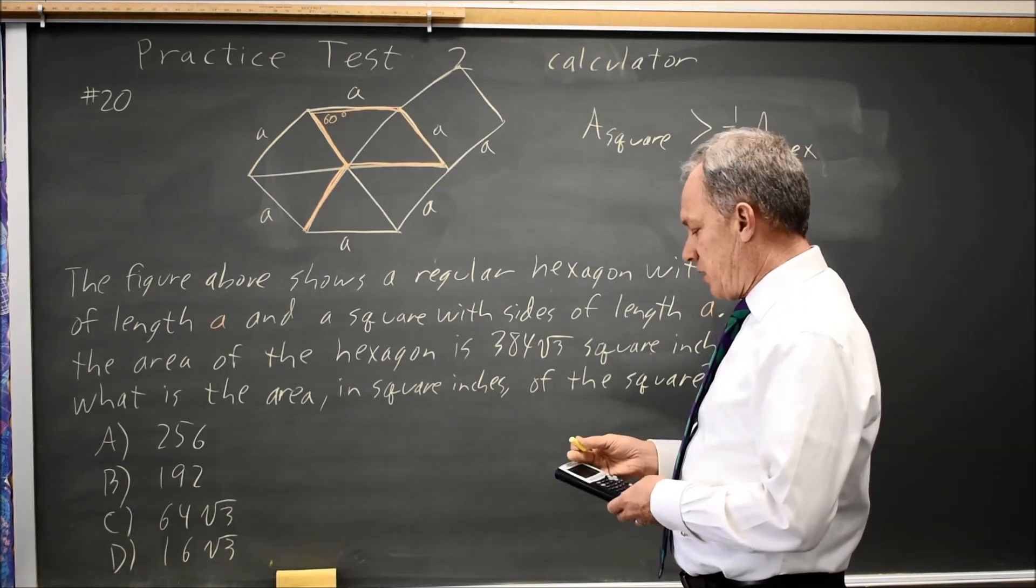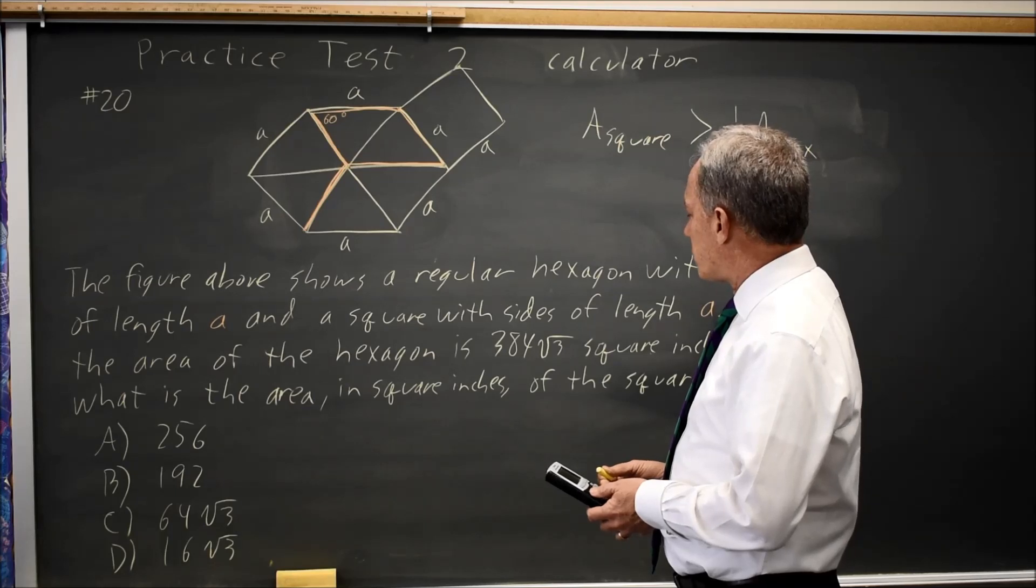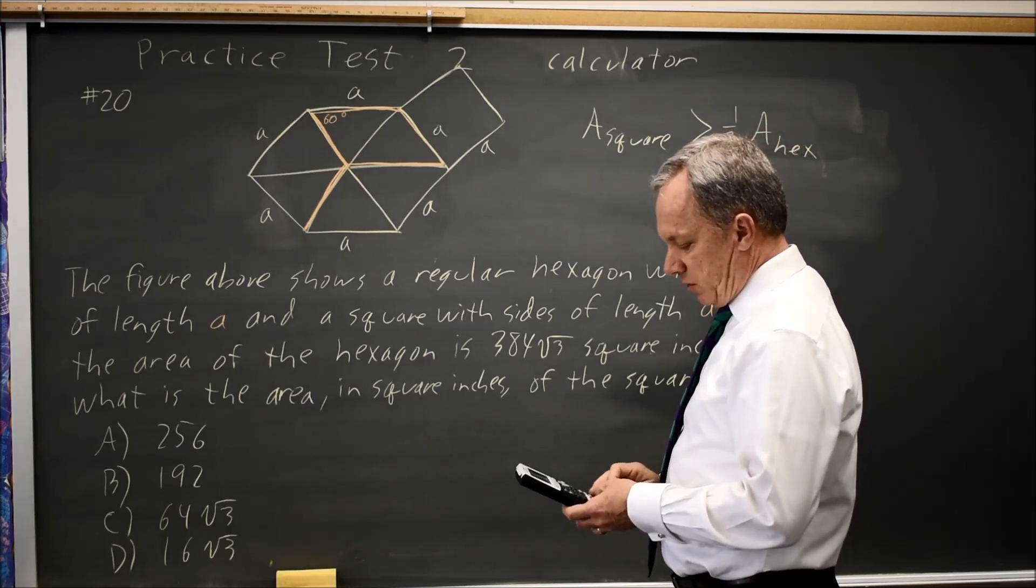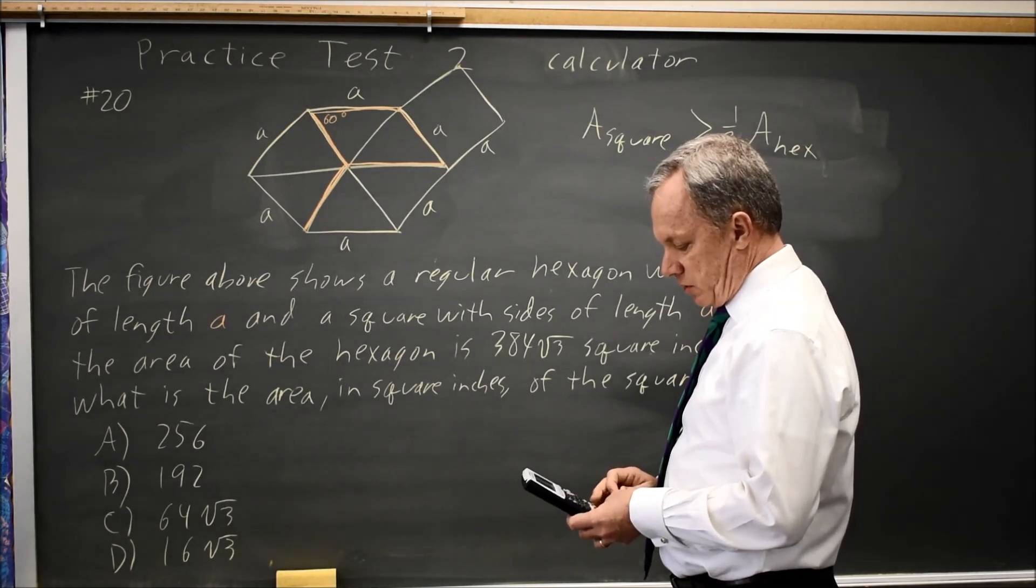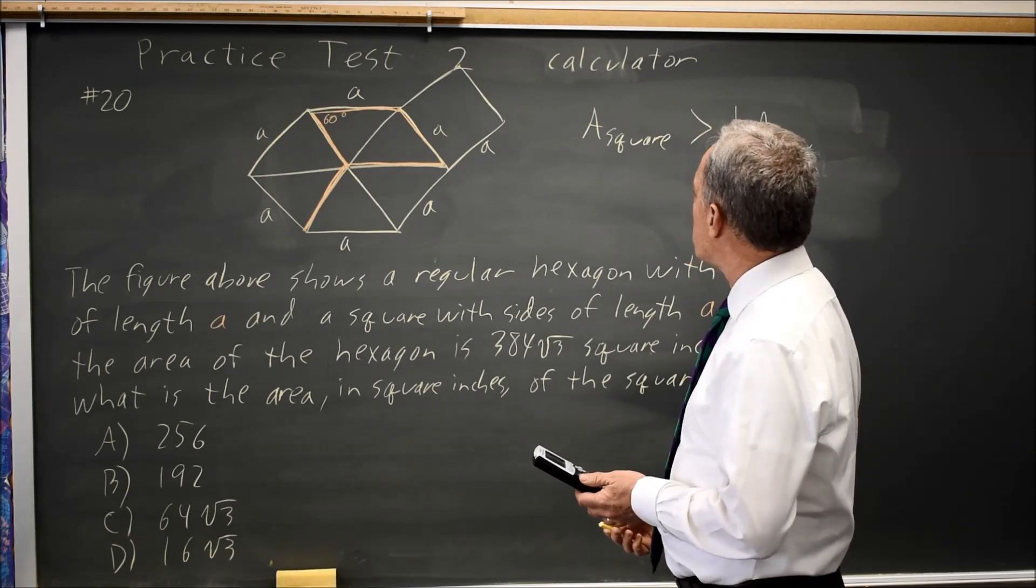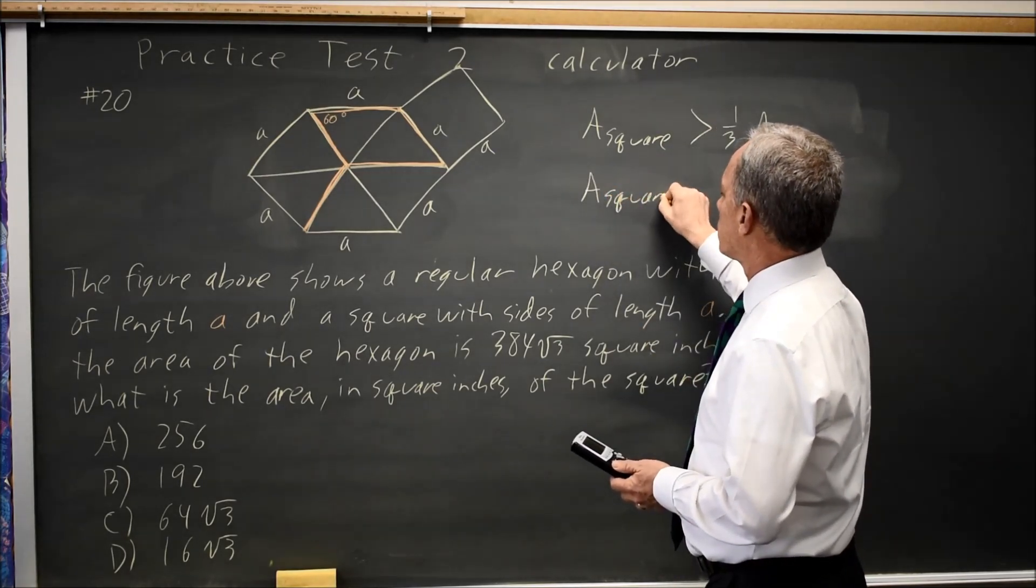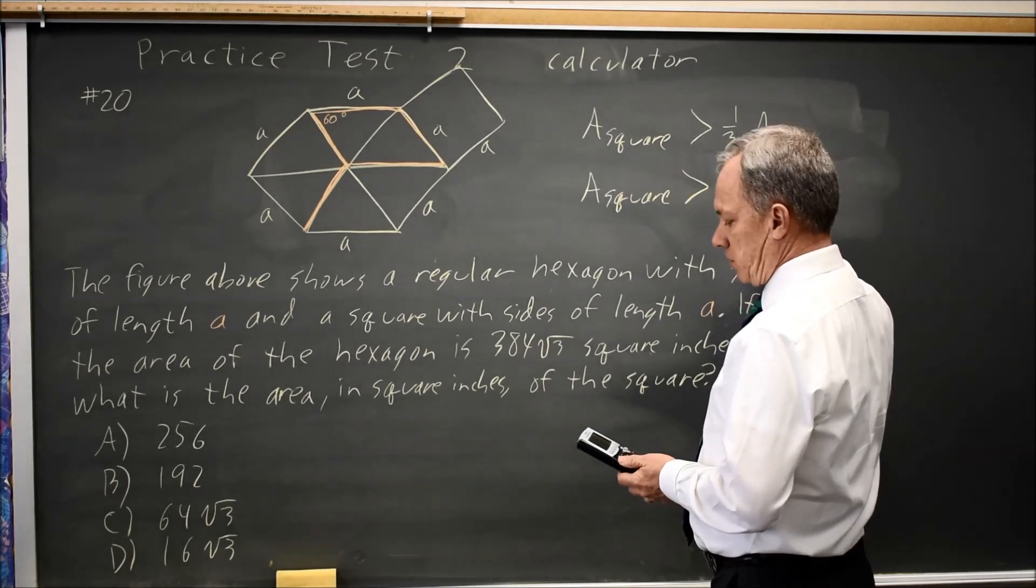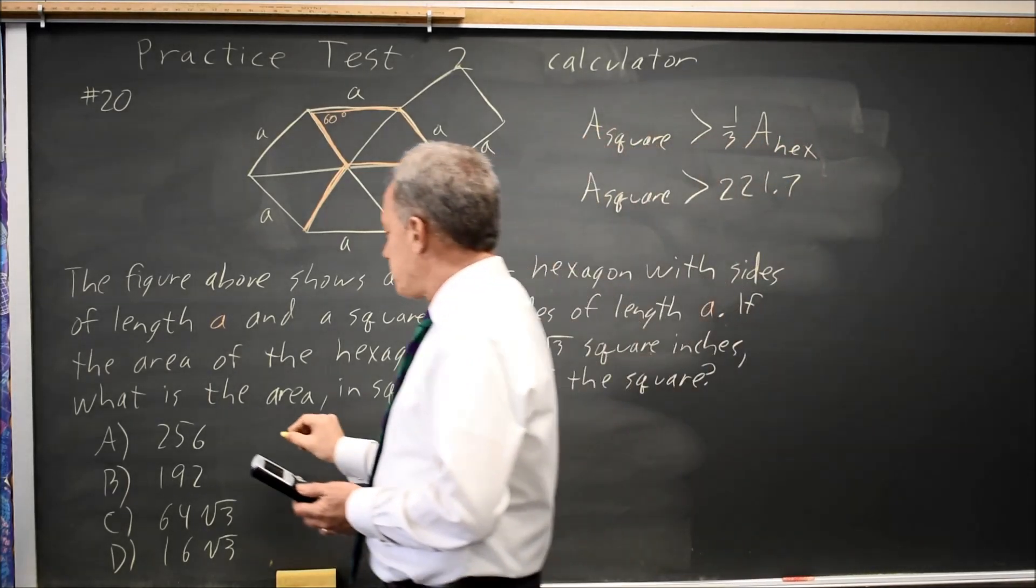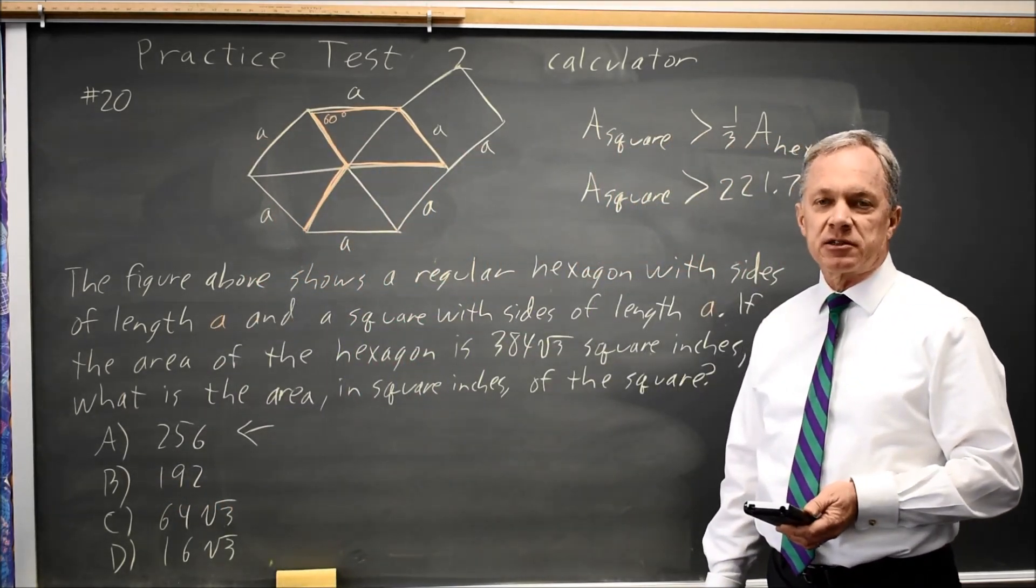Finding the hexagon area, 384√3, divided by 3 gives 128√3 or about 221.7. The square area must be greater than 221, and the only answer choice greater than 221 is choice A, so that's the correct answer.